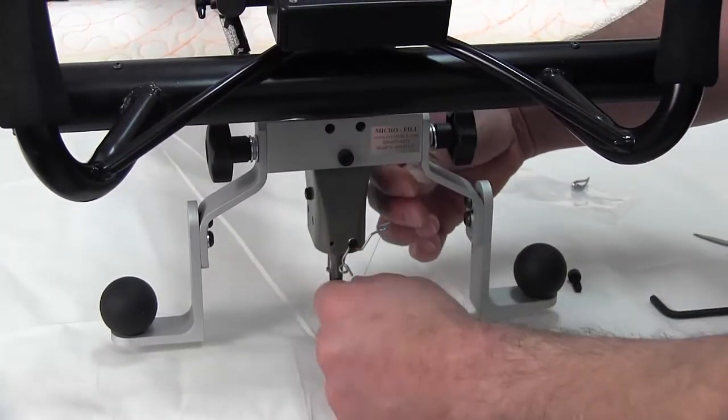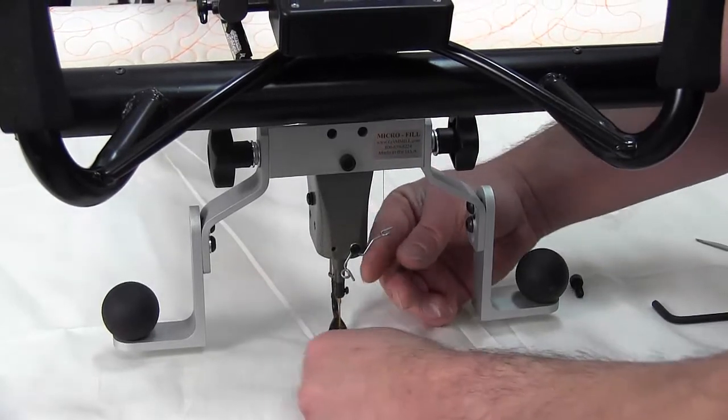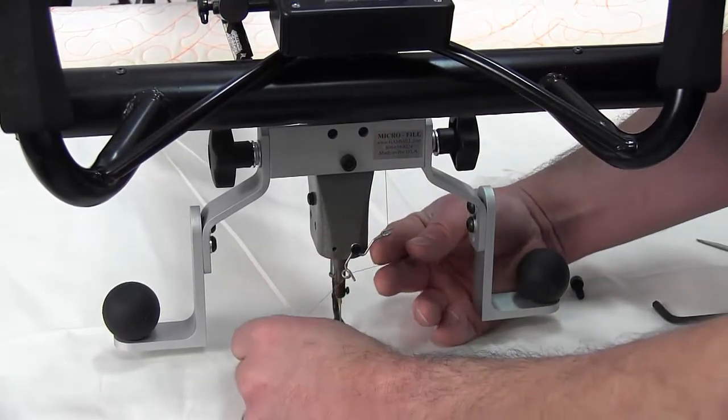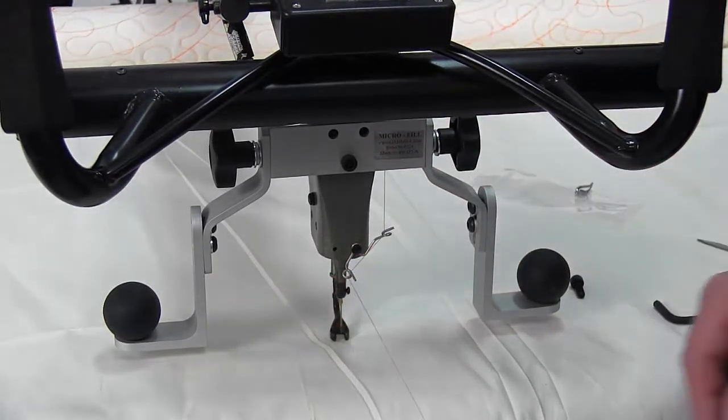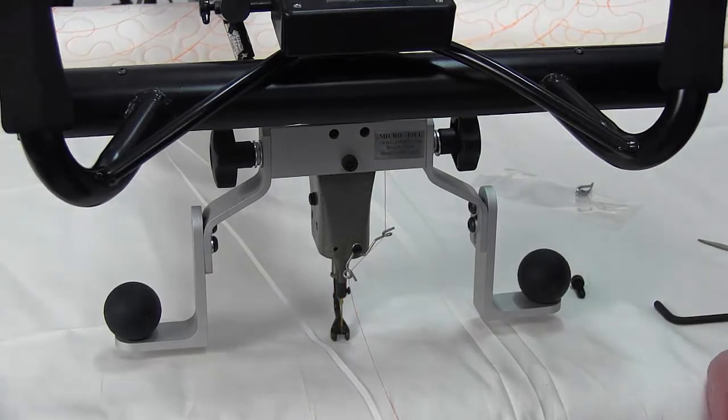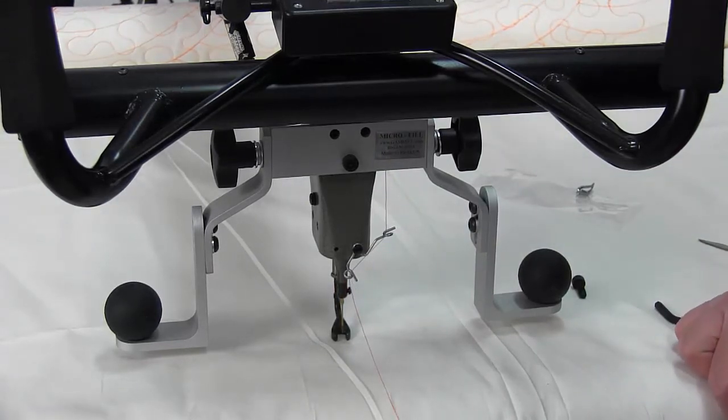And these wires are bent, so you can just kind of slip that in there just like that, and then straight down through your needle. And that's how you install the Micro-Quill handles.